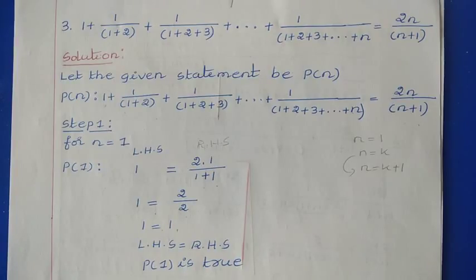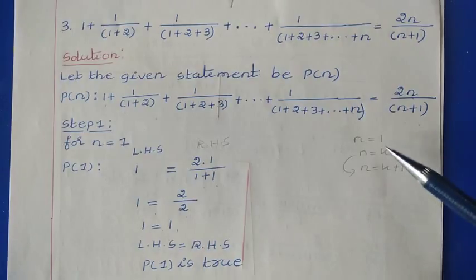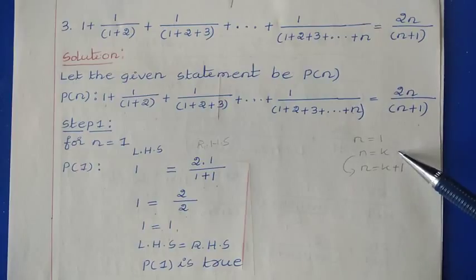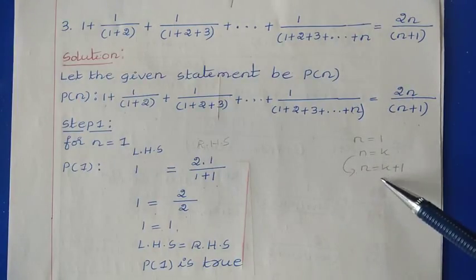Question number 3: 1 plus 1/(1+2) plus 1/(1+2+3) plus so on up to 1/(1+2+3+...+N) is equal to 2N divided by N plus 1. To prove this statement, we have to follow 3 steps: the first step is proving for N=1, the second step is making the assumption for N=K, and the third step is proving the statement for N=K+1 using the assumption.